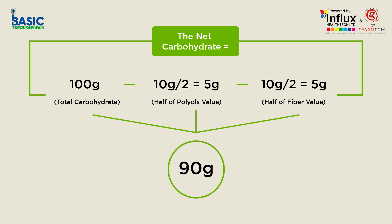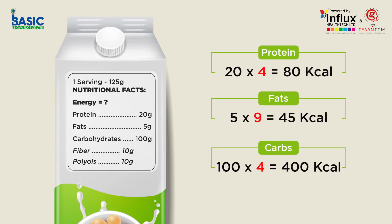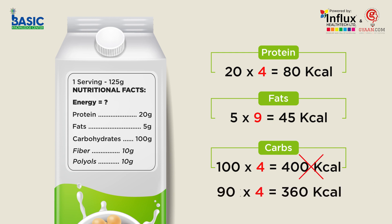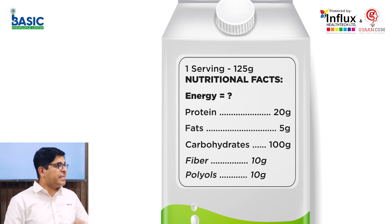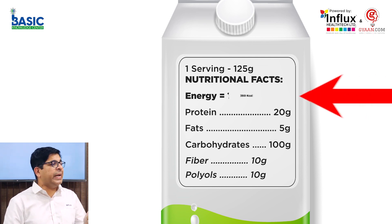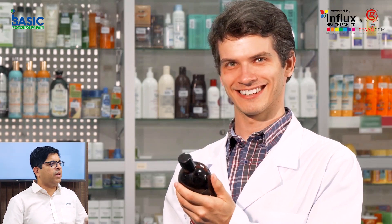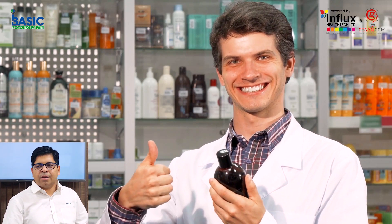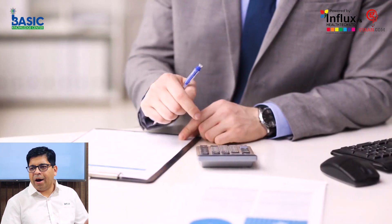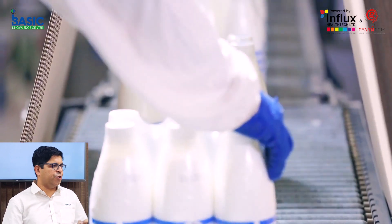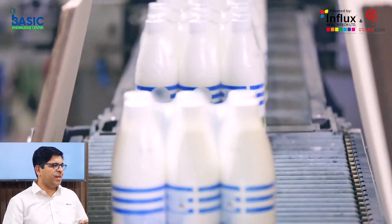So the energy produced from carbohydrate is actually 360 kilocalories, not 400 kilocalories. The example label we took should be read in this manner. This clears the concept of how a manufacturer calculates the energy and puts it on the label.